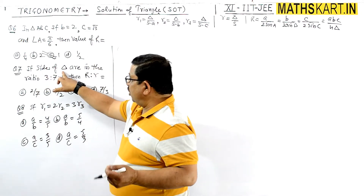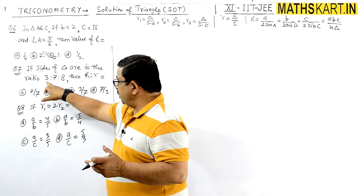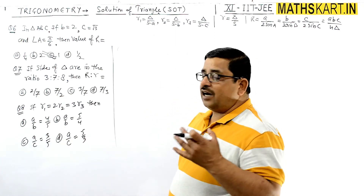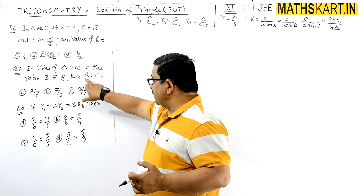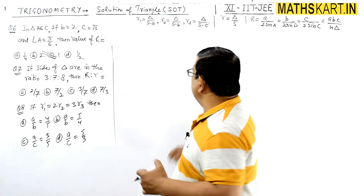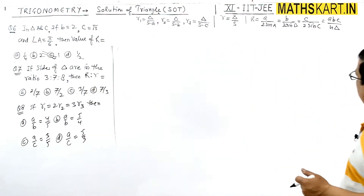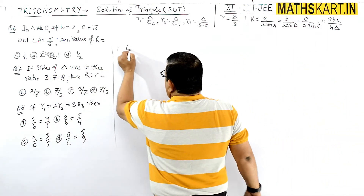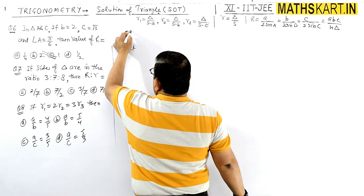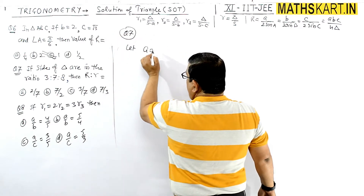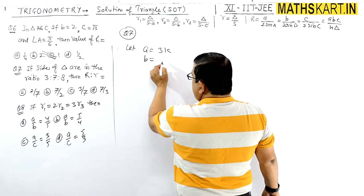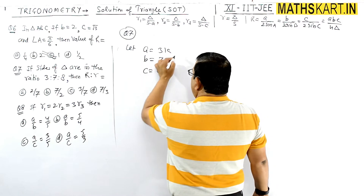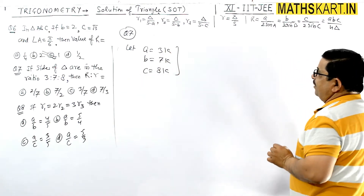Question 7: If the sides of a triangle are in the ratio 3:7:8, find R/r. Sides का ratio given है — let a = 3k, b = 7k, and c = 8k। हमें capital R by small r की value निकालनी है।